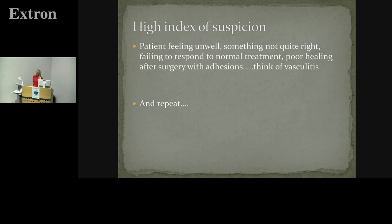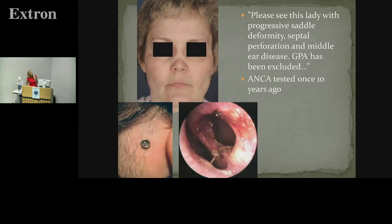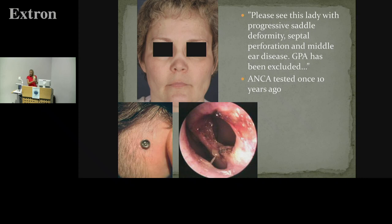You have to repeat that index of suspicion. This is a patient referred to me who walked into clinic as the textbook description of GPA ten years down the line — terrible saddle deformity, total septal perforation, bilateral middle ear disease. You couldn't have got a better picture of GPA. But the referral letter said GPA had been excluded because ANCA was negative on the first presentation ten years earlier, and it was never repeated, even as the picture progressed. You need to keep rethinking and keep retesting.